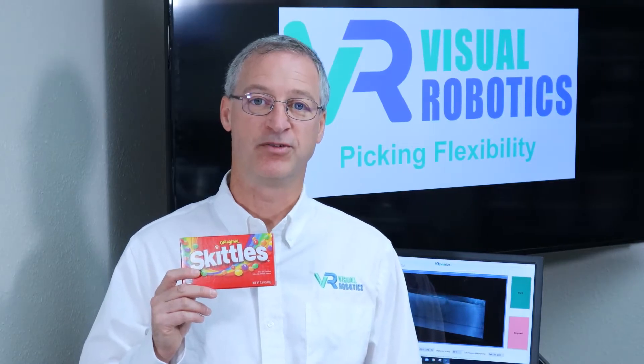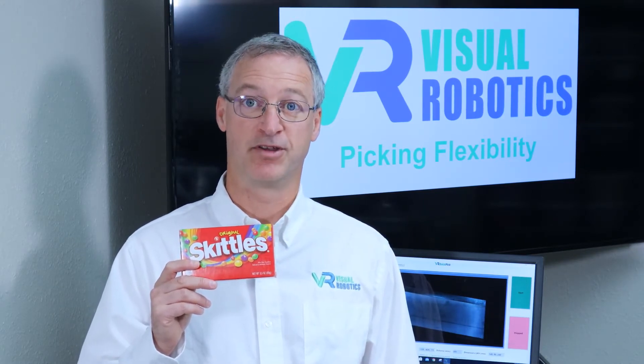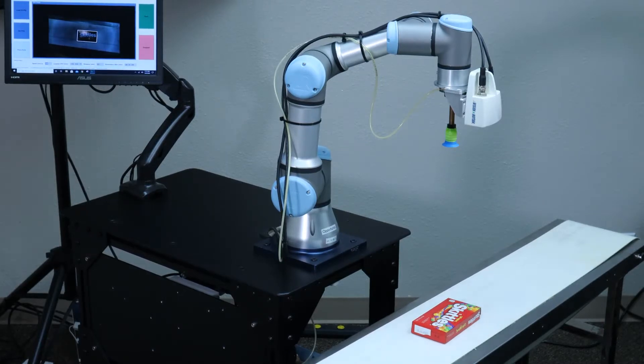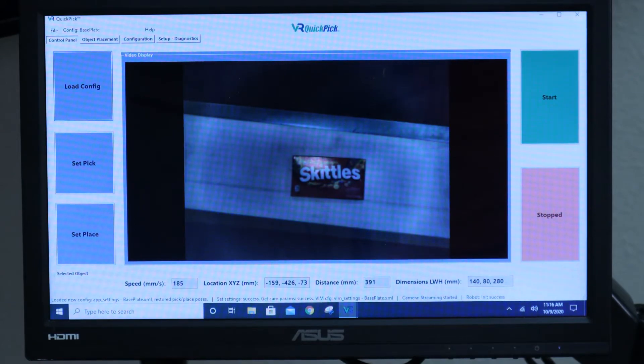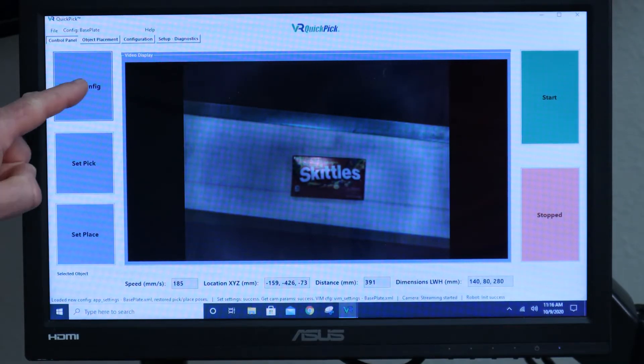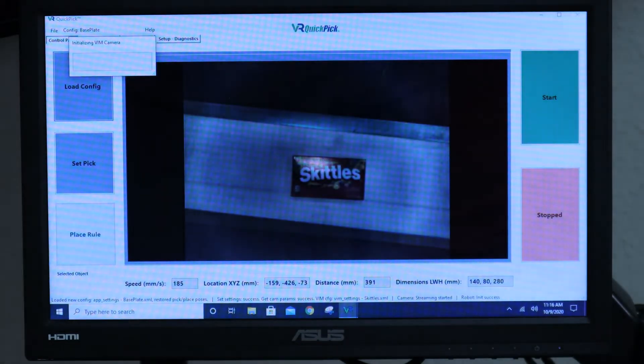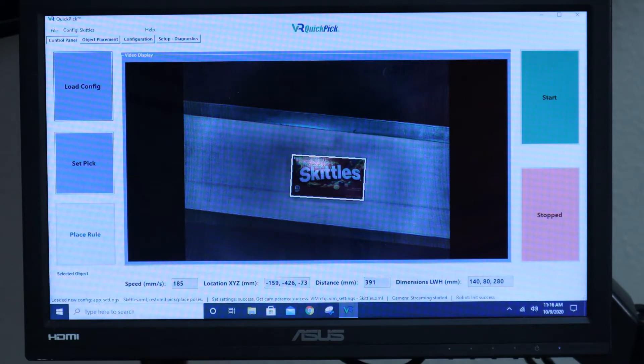For this demonstration, we'll pick boxes of Skittles from various locations and stack them on the cart. To start, I have put a box of Skittles on a white conveyor belt. Here you can see Quick Pick on the touch screen. I will press load config and select my Skittles configuration in order to see Skittles. As you can see, Skittles is shown outlined in white on the screen.